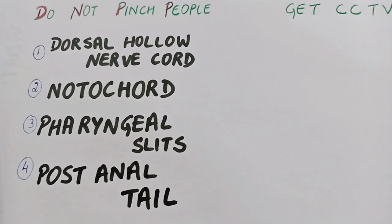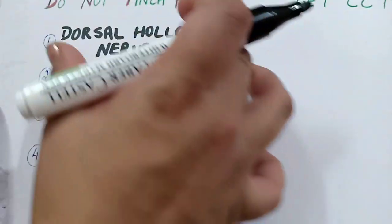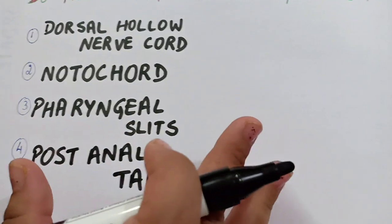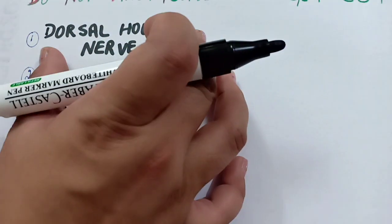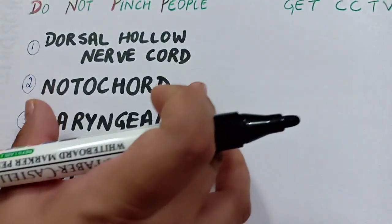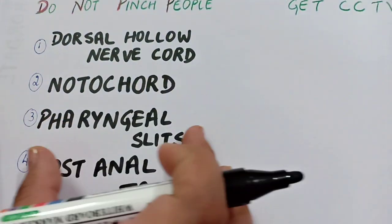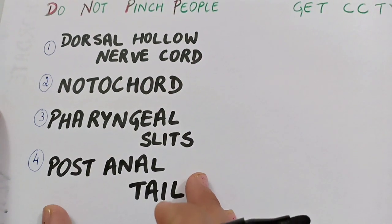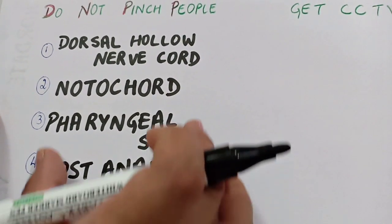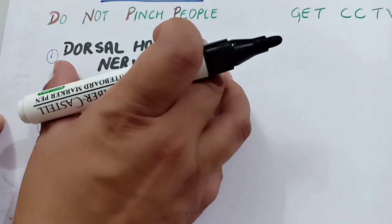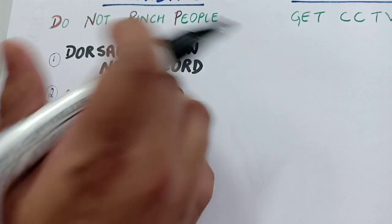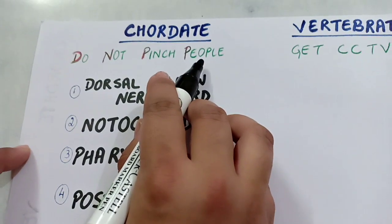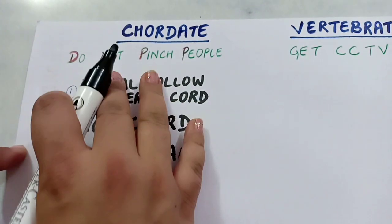So these are the four basic features that all chordates will have: dorsal hollow nerve chord, notochord, pharyngeal slits, and post anal tail. The shortcut to learn all these four features is 'Do Not Pinch People.'